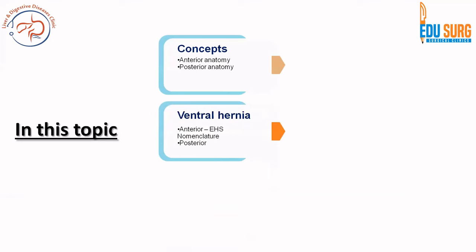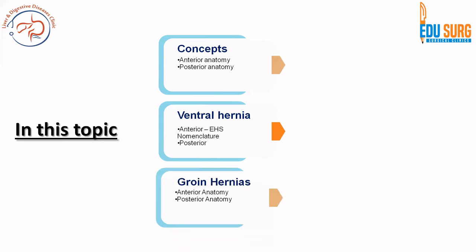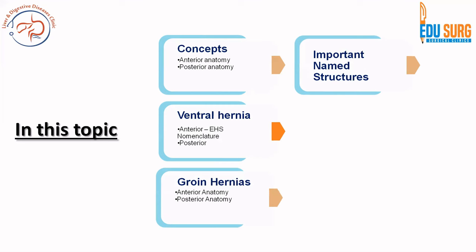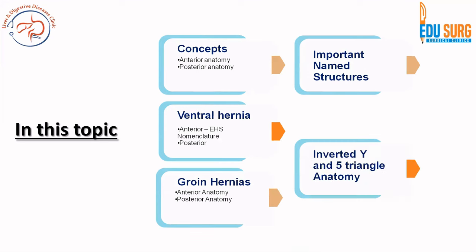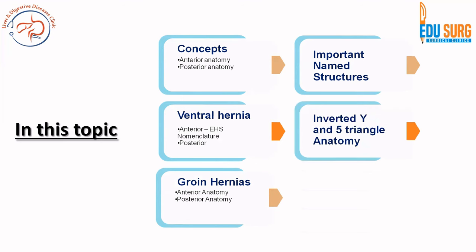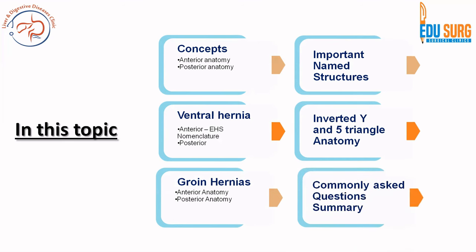In this topic we are going to understand the important concepts that have come up in recent times — that is the anterior and the posterior aspects of anatomy, or from outside and from inside, because in laparoscopy you see things from inside and open anatomy is different from laparoscopic anatomy. Then we will delve into ventral hernia, understanding the anterior and the posterior anatomy, the nomenclature or the classification of ventral hernia. Going into groin hernias, we will again look at anterior and posterior anatomy. Throughout this series we will see how different named structures contribute to the anatomy of this area. We will also look at the inverted Y and the phi triangle concept of laparoscopic hernia anatomy, and a lot of commonly asked exam questions as well as important points to remember while performing hernia surgery will be answered.